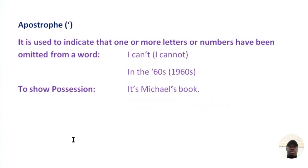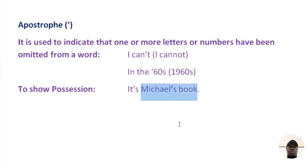Apostrophe. This punctuation mark is used to indicate that one or more letters or numbers have been omitted from a word — for example: 'I can't.' This is a contraction; it simply means 'I cannot.' Removing the letters does not change the meaning. Also, 'in the 60s' simply means in the 1960s. The apostrophe can also be used to show possession — for example: 'It's Michael's book,' showing the book belongs to Michael.